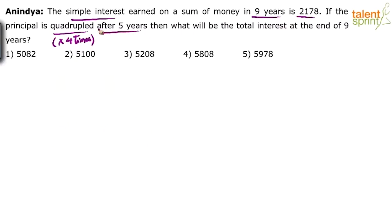For the first 5 years the principal is P. But after 5 years the principal is quadrupled, so it is multiplied by 4. If there is no change, then the interest in 9 years is 2178. But with the principal getting quadrupled after 5 years, what will be the interest at the end of 9 years?